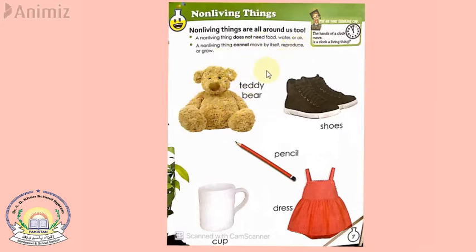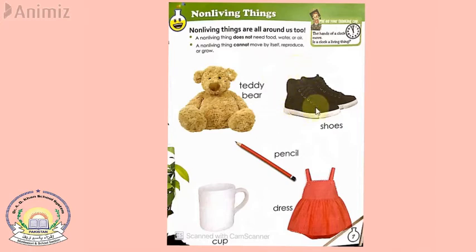Non-living things cannot reproduce — meaning this teddy bear cannot make copies of itself, it cannot make a small or big teddy bear. Shoes at your home cannot make another pair of shoes by themselves; you have to buy non-living things. They also cannot grow — if you buy a pair of small shoes, they will remain small. A pencil does not grow; if you sharpen it, it becomes less. Similarly, a dress and a cup do not grow. These are all non-living things because they do not need food, air, or water, and they cannot move, reproduce, or grow.